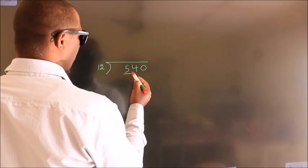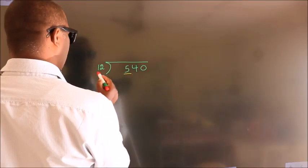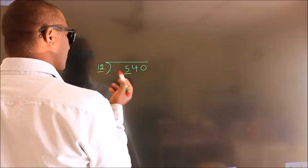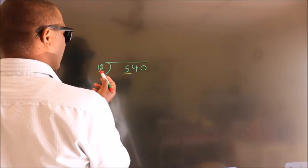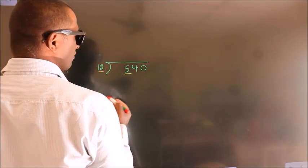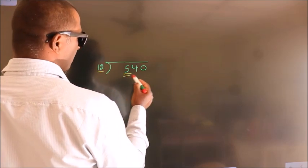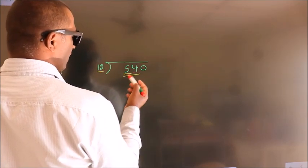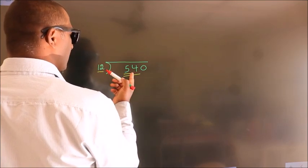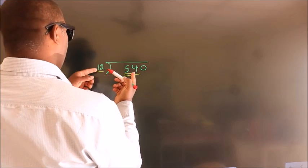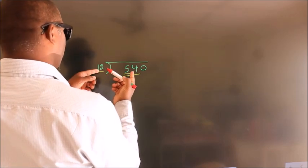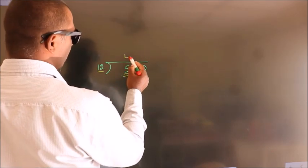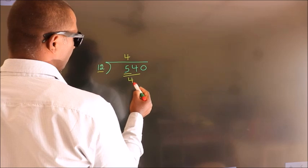Here we have 5. Here 12. 5 is smaller than 12, so we should take two numbers: 54. A number close to 54 in the 12 table is 12 fours, 48.